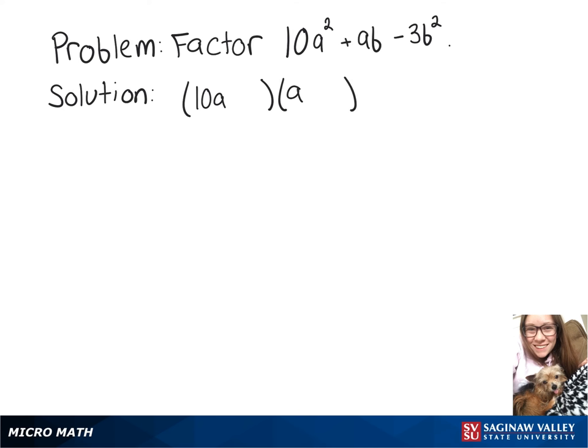And now we want to factor our minus 3b squared. So that could factor into negative 3b and b. So let's also write it over here with those flip-flops. So we'll write 10a plus b and a minus 3b.